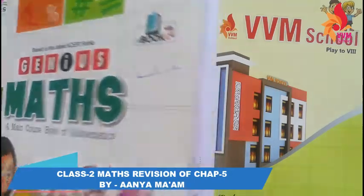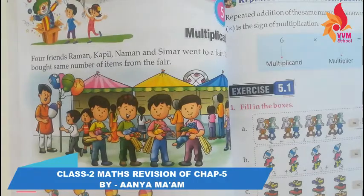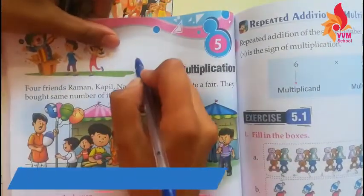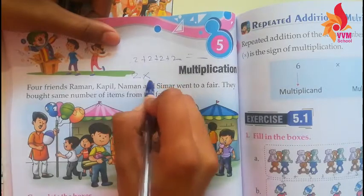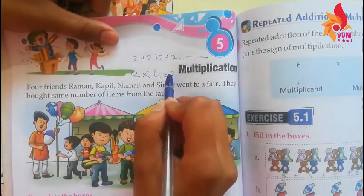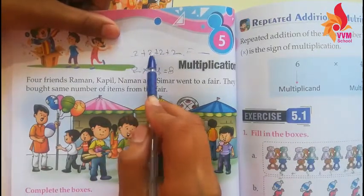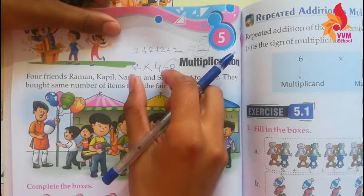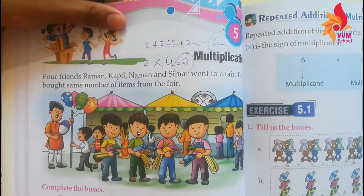Our 5th chapter is multiplication. Multiplication is the repeated addition of the same number. For example, 2 plus 2 plus 2 plus 2 — that is 2 added 4 times. 2 plus 2 is 4, 4 plus 2 is 6, 6 plus 2 is 8. The answer is the same. The repeated addition of the same numbers is what we call multiplication — it is the short form.